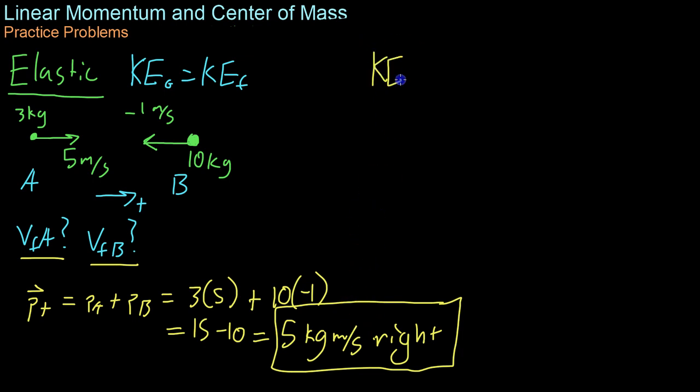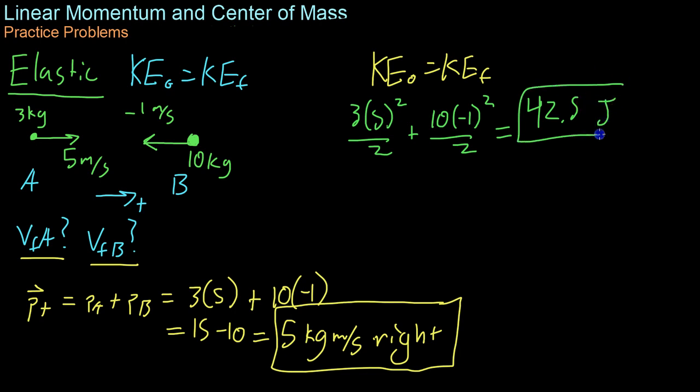You have to realize that KE0 will equal the final kinetic energy as well. So we solve for how much initial kinetic energy there is in the system. You have 3 times 5 squared over 2 plus 10 times negative 1 squared over 2, or 3 times 25 is 75 plus 5 yields 42.5 joules of energy in the system. Now that we've solved for both of those quantities, we can basically set up equations for the final velocities of both A and B.